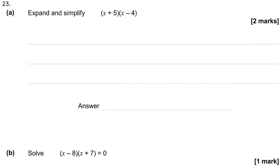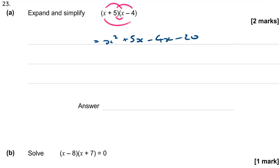Expand and simplify (x plus 5)(x minus 4). We've got two brackets to multiply out. That gives x squared plus 5x minus 4x minus 20. Collecting like terms in the middle: 5x take away 4x is x, so the final answer is x squared plus x minus 20.